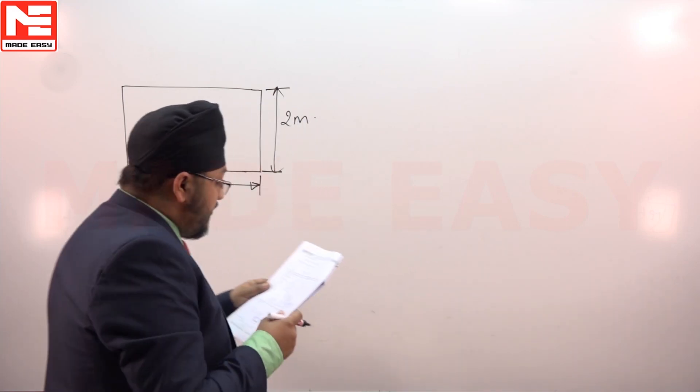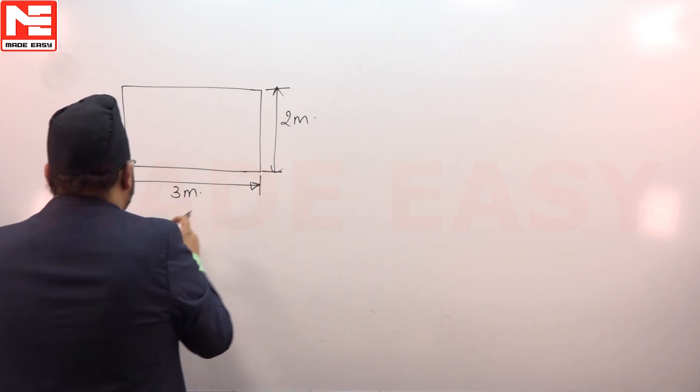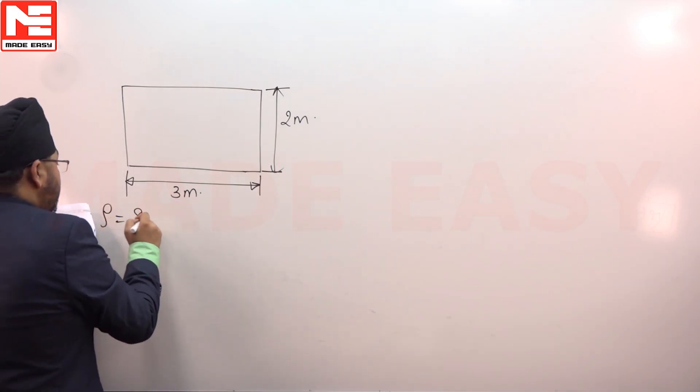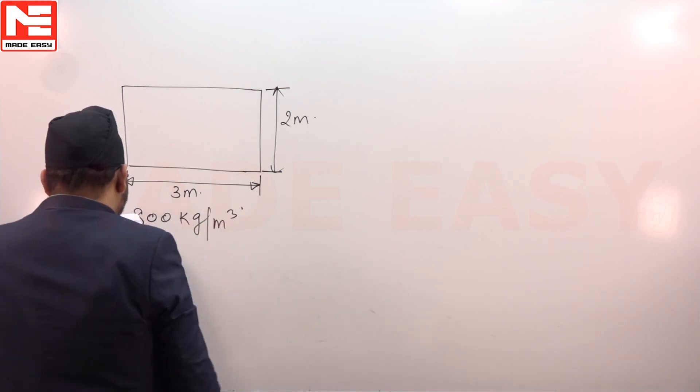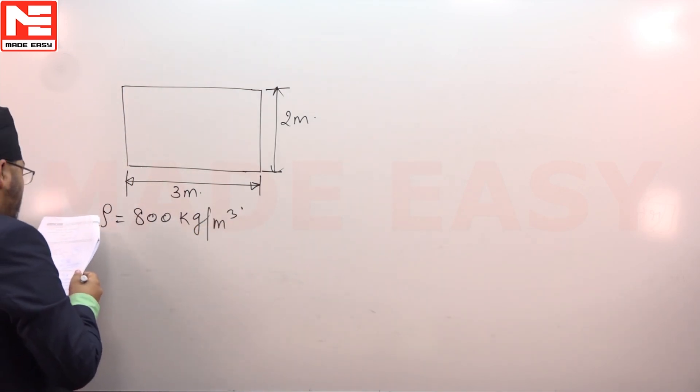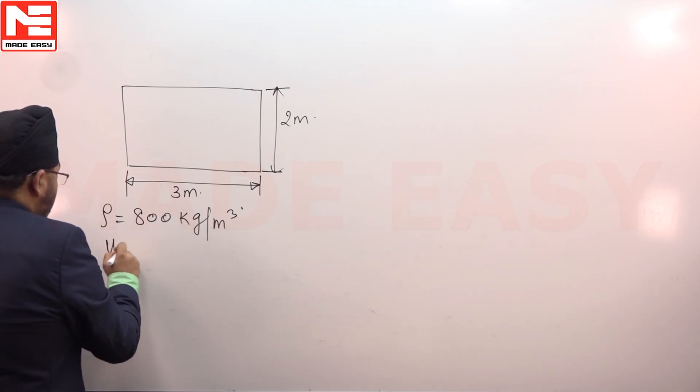A smooth plate 2 meter wide and 3 meter long is towed in oil of density 800 kg per meter cube and velocity of 2 meter per second along its length. So u infinity, the free stream velocity, is going to be 2 meter per second.